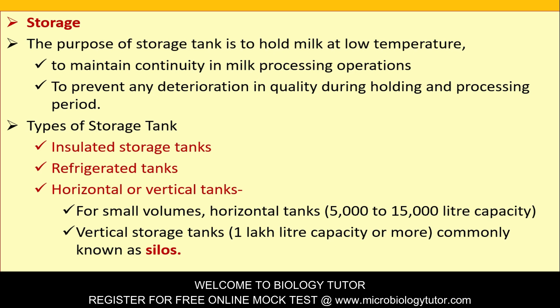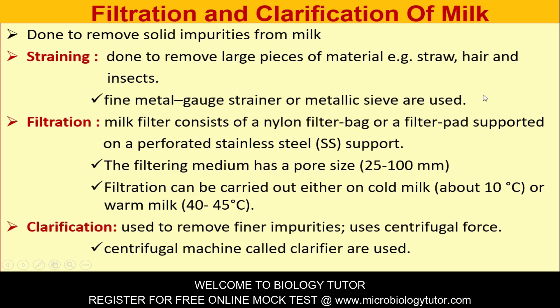Vertical storage tanks are commonly known as silos. Filtration and clarification is done to remove solid impurities from milk. Straining removes large pieces of material like straw, hair, and insects using a fine metal gauge strainer or metallic sieve. Filtration uses a milk filter consisting of a nylon filter bag or a filter pad supported on a perforated stainless steel support; the filtering medium has a pore size of 25 to 100 micrometers.